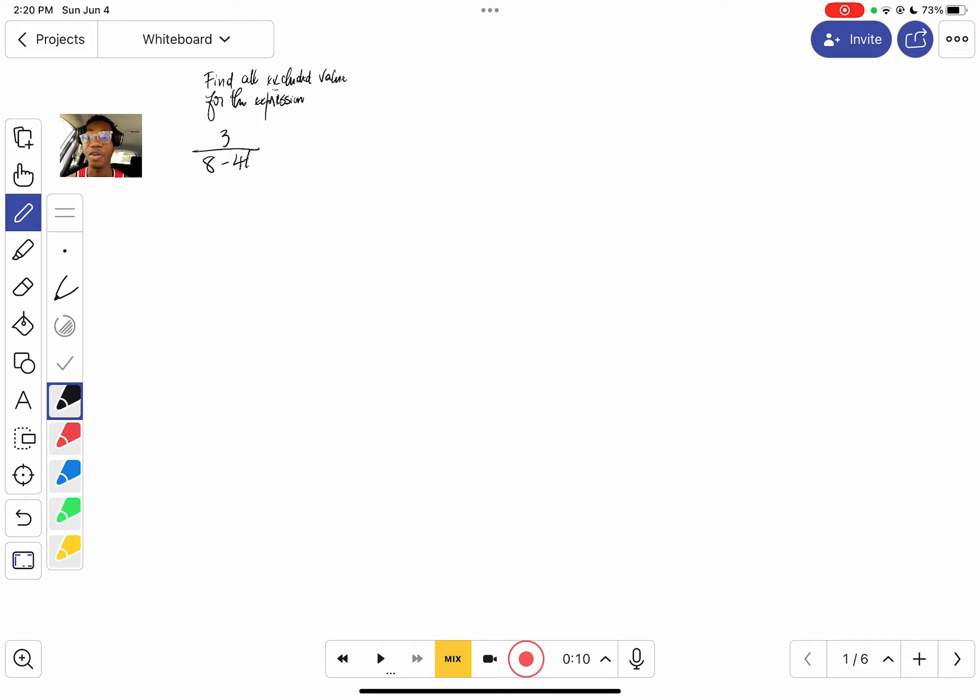The excluded values are going to be the values that will make the denominator equal to zero. Once the denominator equals zero, the expression will be undefined because division by zero is not possible.